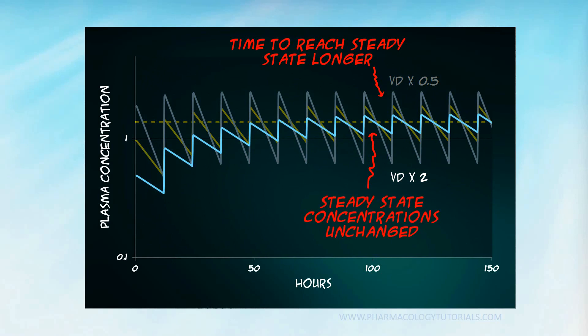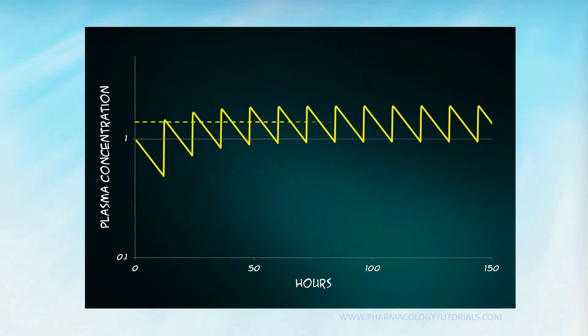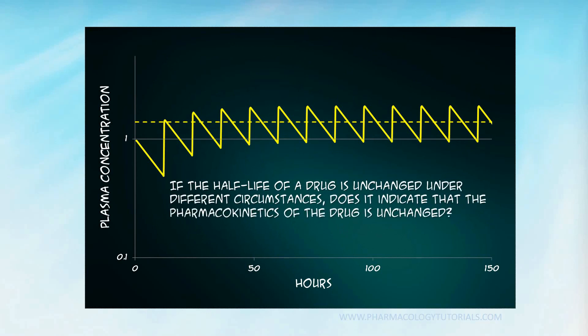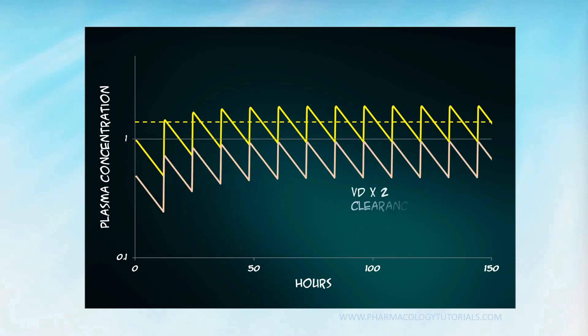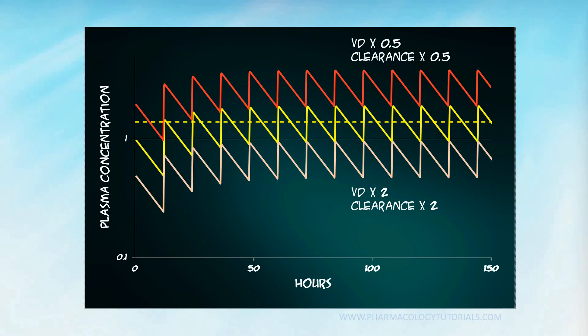Now here's something important for you to consider. If you observe that the drug's half-life is not altered under various conditions, can you assume that the drug's pharmacokinetics has not been affected? The answer is no. The half-life can remain unchanged because of parallel and equal changes in volume of distribution and clearance. As you can see from these plots, the pharmacokinetic outcomes can be very different.